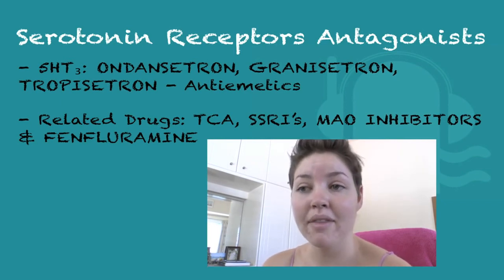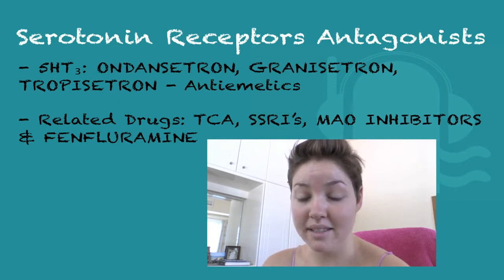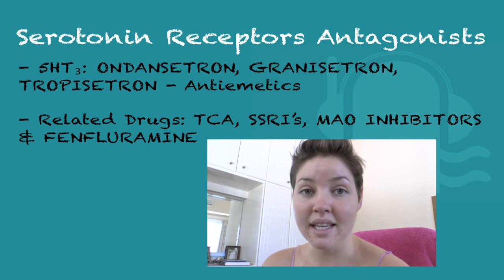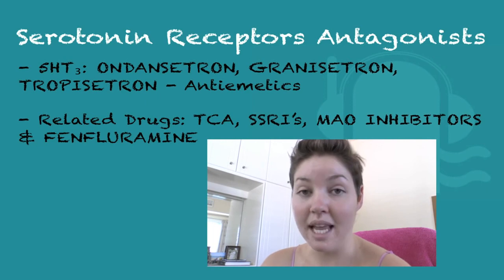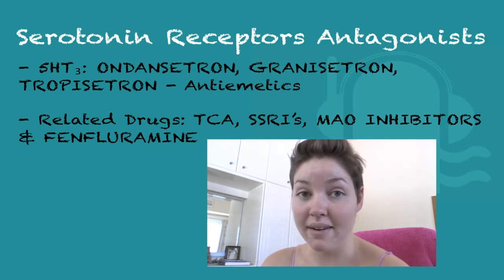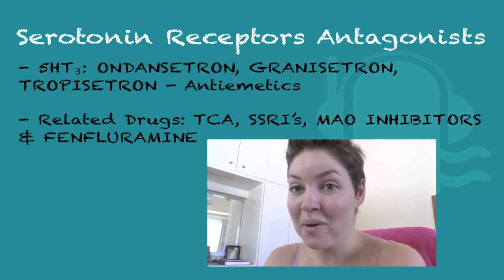Now I'm going to tell you a little bit about the related drugs used with serotonin receptors. Tricyclic antidepressants inhibit uptake 1, which inhibits serotonin reuptake, and they're used as antidepressants. Also, MAO inhibitors and serotonin reuptake inhibitors, also used as antidepressants, inhibit serotonin reuptake and inhibit the methylation of serotonin. Fenfluramine decreases appetite and increases serotonin release, but its side effect is pulmonary hypertension. I hope you found this useful and I'm going to see you soon with another pharmacology lecture.